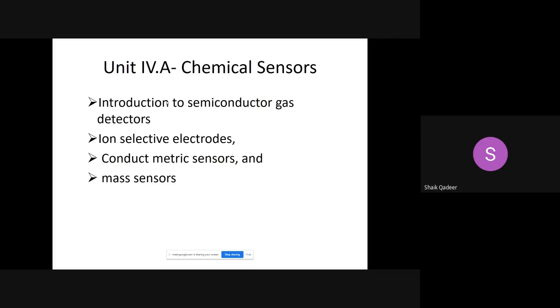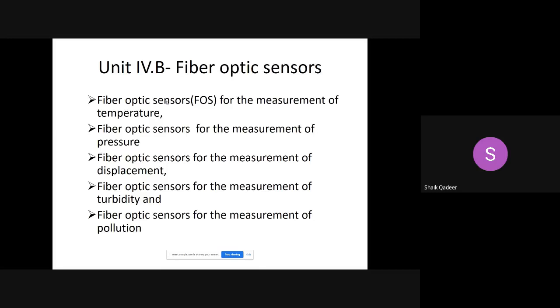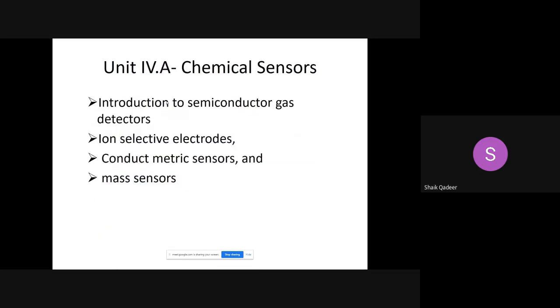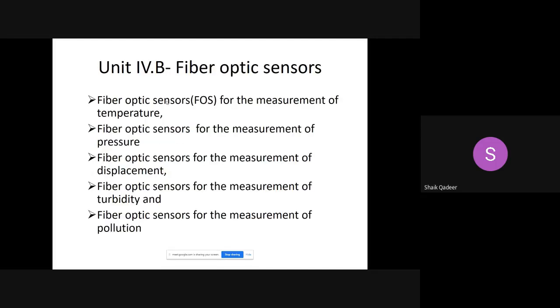Unit 4 comprises of two parts. Part A covers chemical sensors, Part B covers fiber optic sensors. Chemical sensors is application-oriented discussion. A few chemical sensors are covered, and the syllabus covers semiconductor gas detectors, ion selective electrodes, conductometric sensors, and mass sensors.